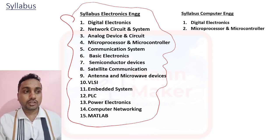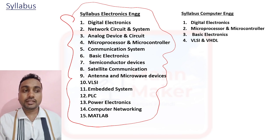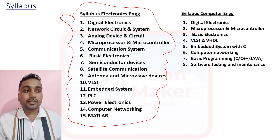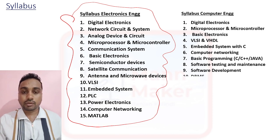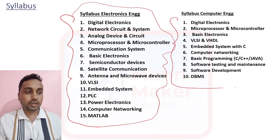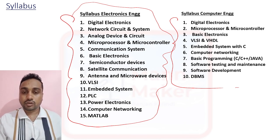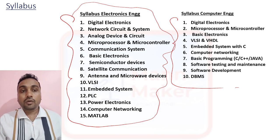For Computer branch: Digital Electronics, Microprocessor and Microcontroller, Basic Electronics, VLSI and VHDL, Embedded System with C, Computer Networking, Basic Programming like C, C++, and Java, Software Testing and Maintenance, Software Development, and Database Management. From all these topics they are going to ask questions for both Trainee Engineer and Project Engineer.